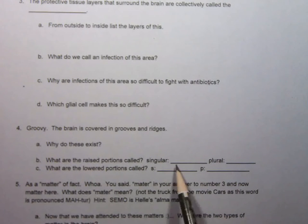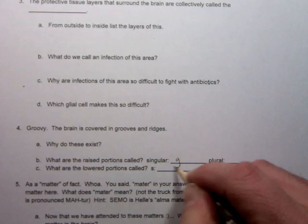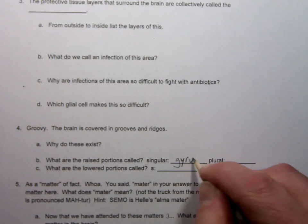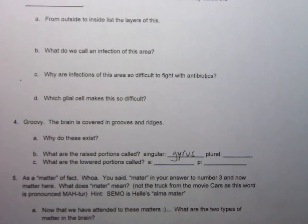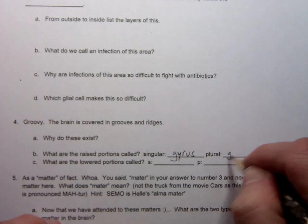First thing we need to talk about is what are the raised portions of the brain called? You got all these bumps and grooves. What are they called? Starts with a G. Alright, no worries. The word is gyrus. Raised portions of the brain are called gyrus. And the plural is the word gyri.